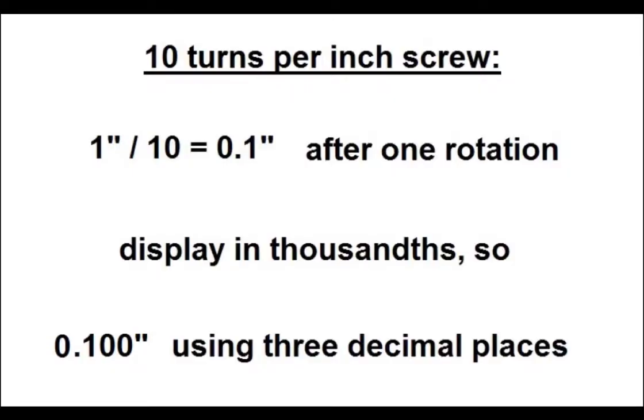For our first example, we will program a 10 turn imperial sized screw, or 10 turns per inch. Therefore, the display should read 0.1 inch after one shaft revolution. In this example, we would also like to display to a thousandths of an inch, so three decimal points will be required.